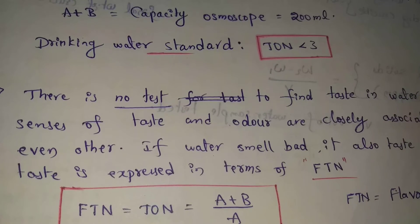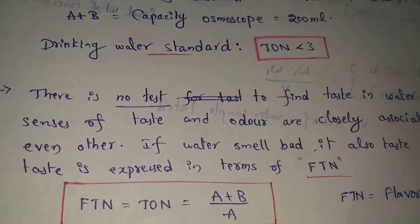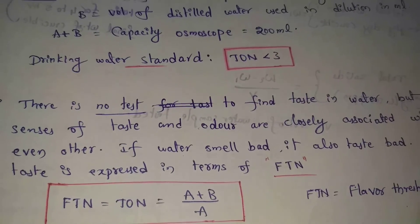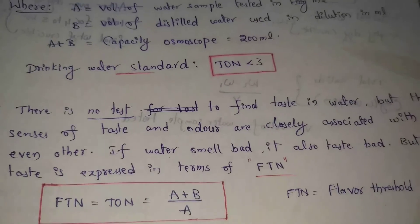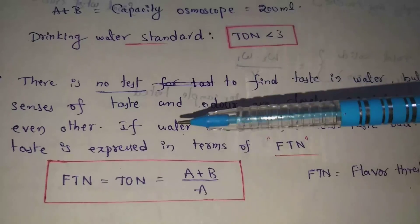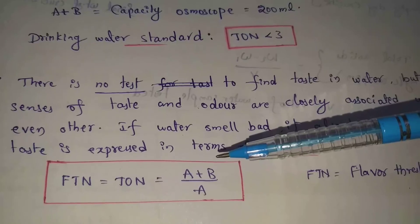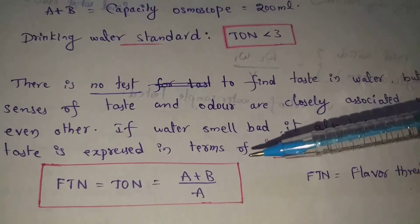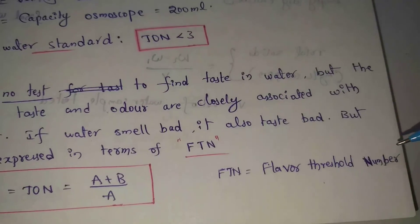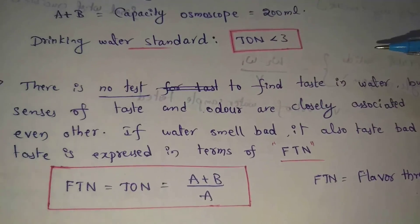If water smells bad, it will also taste bad automatically. Taste is expressed in terms of FTN — Flavor Threshold Number — where F means Flavor, T means Threshold, and N means Number. FTN equals TON, using the same formula: FTN equals a plus b divided by a.